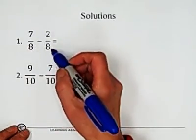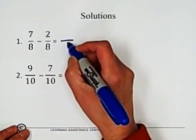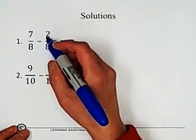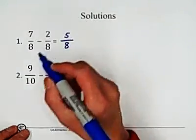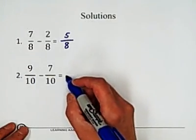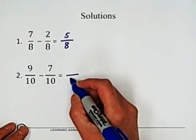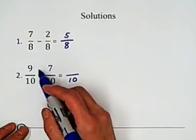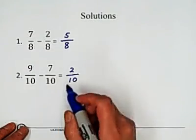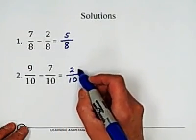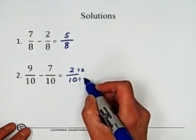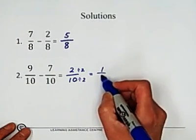Same denominator, keep denominator unchanged. Subtract the numerator 7 minus 2 equals 5. Second, keep denominator unchanged. Subtract the numerator 9 minus 7 equals 2. 2 and 10 can be simplified by dividing by 2. 1 over 5.